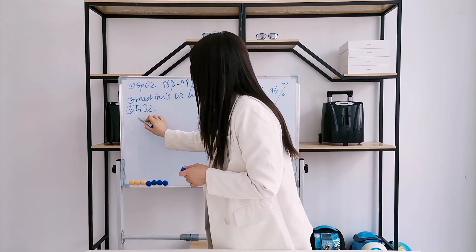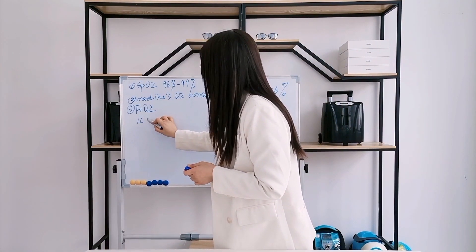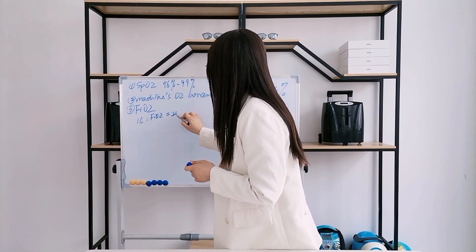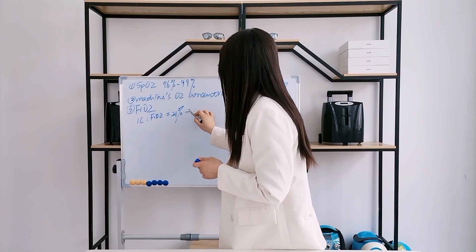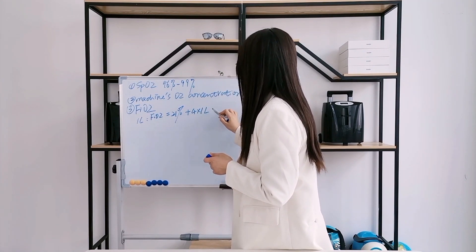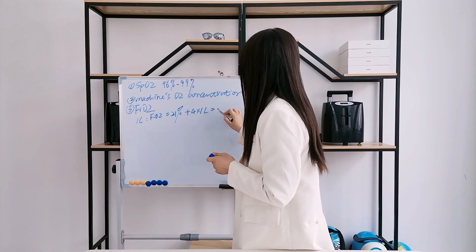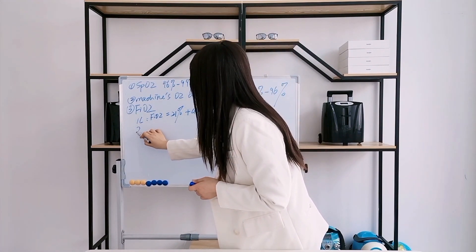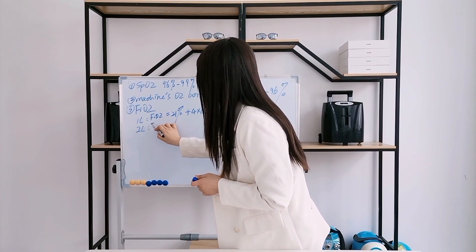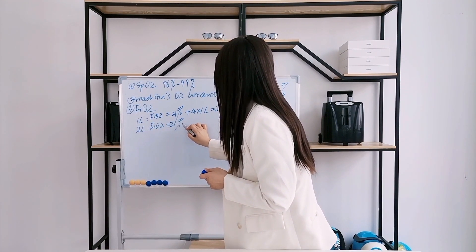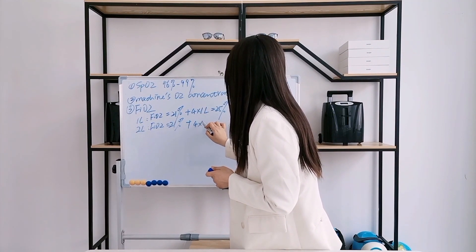For example, when you are using one liter per minute, FiO2 equals... Two liters per minute, FiO2 equals...